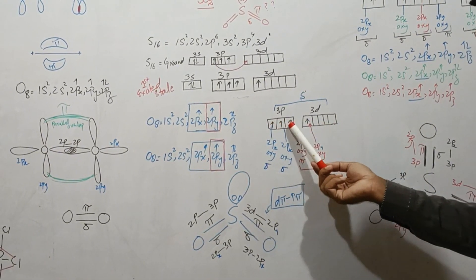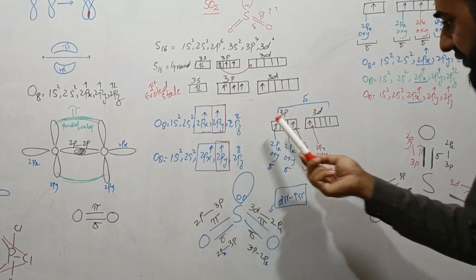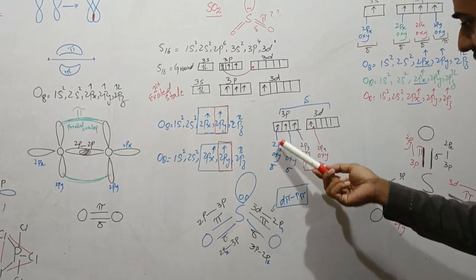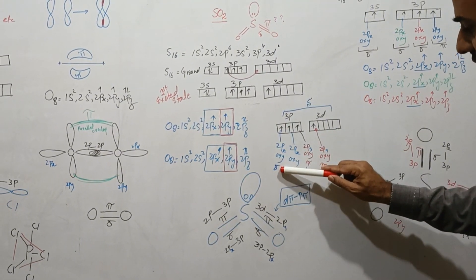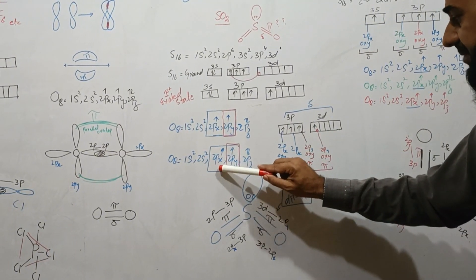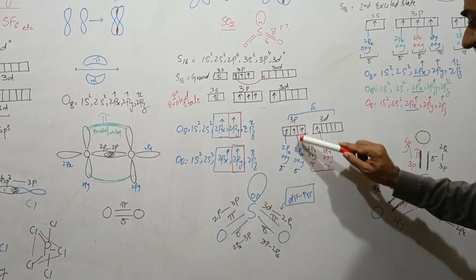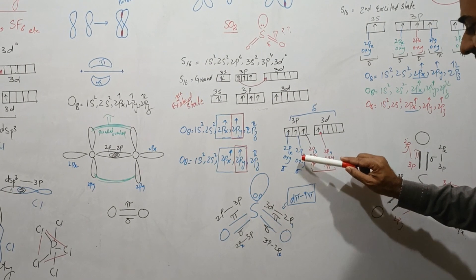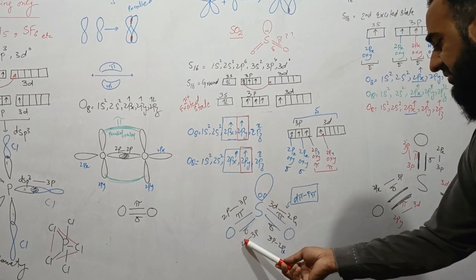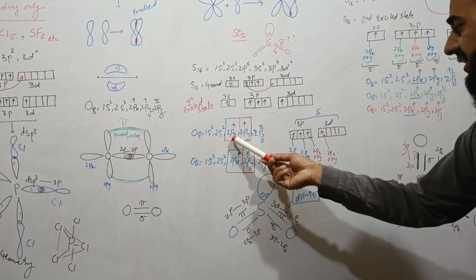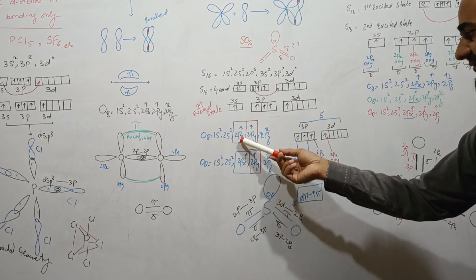The 2px of one oxygen overlaps with the 3p of sulfur — a linear overlap forming a sigma bond. The 2px of the other oxygen also overlaps with the 3p orbital of sulfur, forming another sigma bond. Both sigma bonds are formed from the overlap of the partially filled 2px orbitals of the two oxygen atoms with 3p orbitals of sulfur.